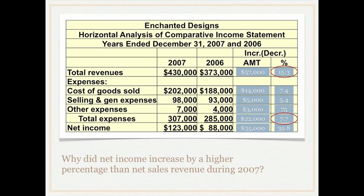Turning back to other expenses — those increased by 75%, however they are small numbers. The reason net income increases by a higher percentage than net sales in this case is because total revenues increased by almost double what total expenses increased by.